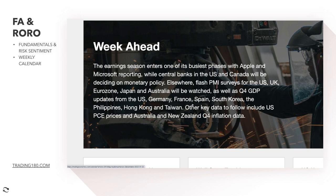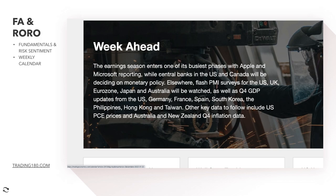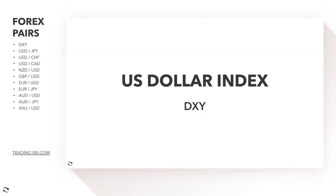Fourth quarter GDP updates from the US, Germany, France, Spain, South Korea, and the Philippines will be released. The US reading is the first fourth quarter reading, so it really sets the tone for the US economy — whether it grew, flatlined, or shrank. Any positive data will be positive for the dollar. Other key indicators include US PCE prices — that's inflation — and Australia and New Zealand fourth quarter inflation data, which will definitely be watched.